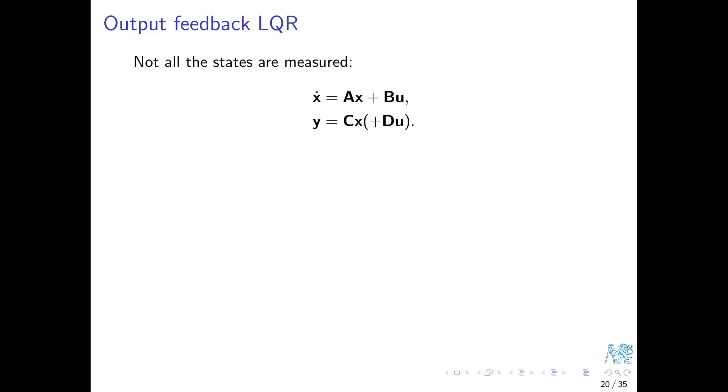Besides the standard state equation, we start using the output equation. This means instead of the state variables, only some subset or linear combination is measured. The task is to find the feedback controller K that takes the outputs Y and projects them directly into the controls U.